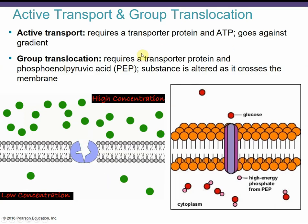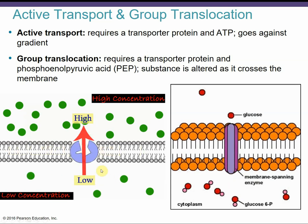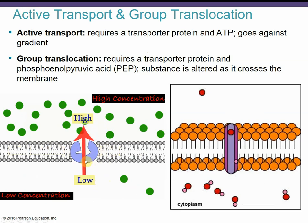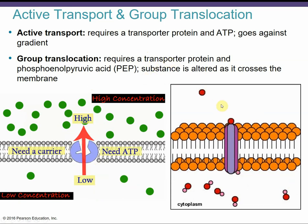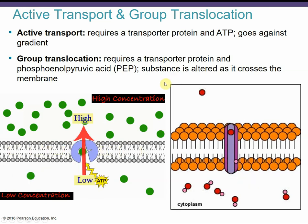Active transport requires energy in the form of ATP. We're going upstream or uphill, against the gradient — natural diffusion goes high to low, so in order to go against the natural flow, we need ATP energy to pump substances across. Group translocation is a type of active transport that requires a transporter protein to carry the substance across the membrane, similar to facilitated diffusion, but again going against the gradient.